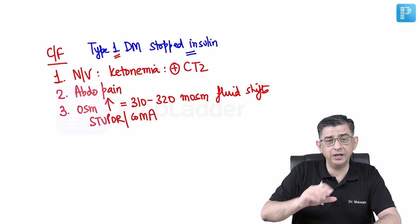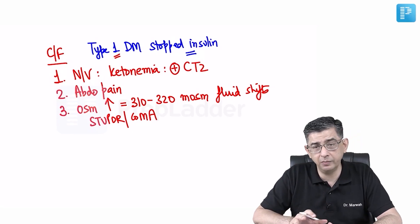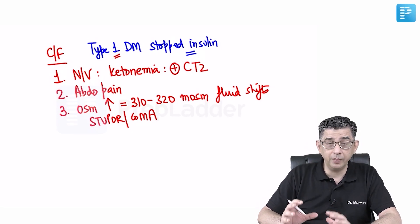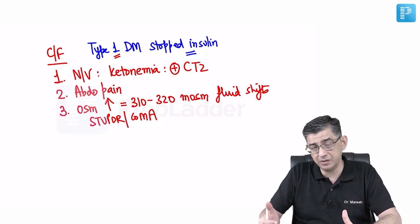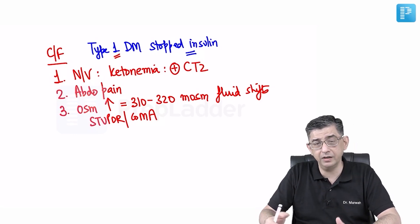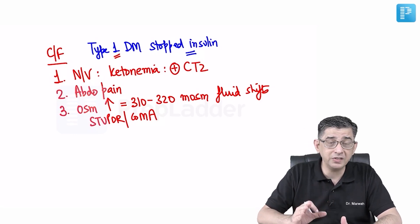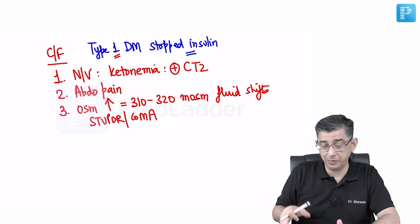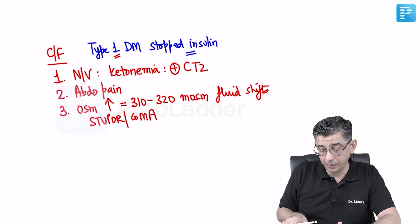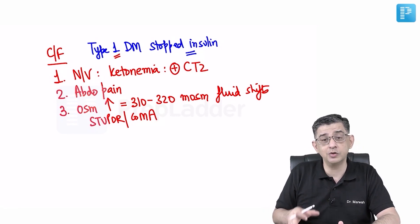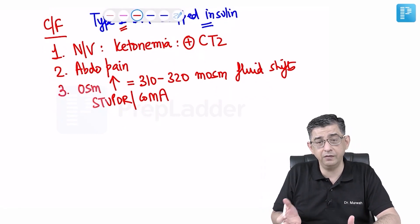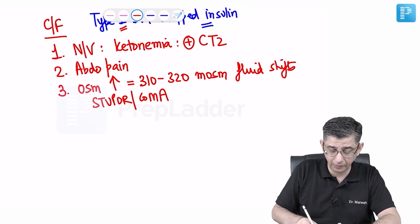Apart from acidosis damaging the blood-brain barrier, the gross elevations of blood sugar — the hyperosmolarity — also contribute to fluid shifts and the development of CNS manifestations.